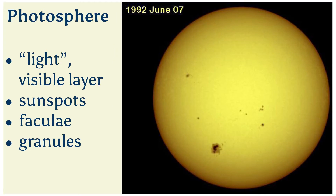Next up is the photosphere — the photo or light layer — the visible surface of the sun that we are most familiar with. Since the sun is a ball of gas or plasma, this is not a solid surface. It's actually a layer about 100 kilometers thick, which compared to the rest of the sun at 700,000 kilometers in radius, is a relatively thin layer.